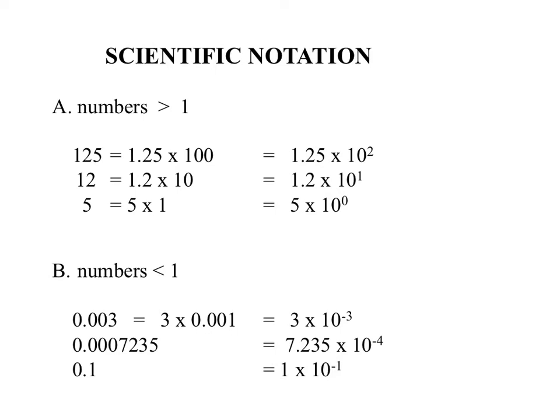A helpful rule: if the number is less than one, the exponent will be negative. For 0.00072 35: move the decimal four places to get 7.235, so it's 7.235 × 10⁻⁴. For 0.1: one place gives 1 × 10⁻¹. For 0.007: think of it as starting at the decimal with the number times 10⁰; moving the decimal four places right makes the number bigger, so the exponent gets smaller — that's why it goes to a negative exponent.